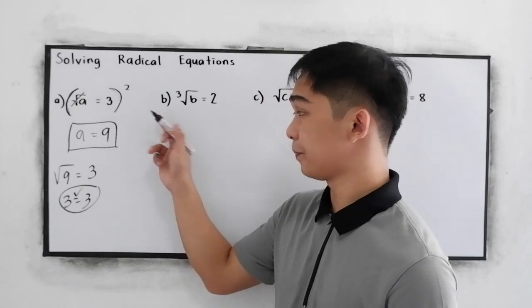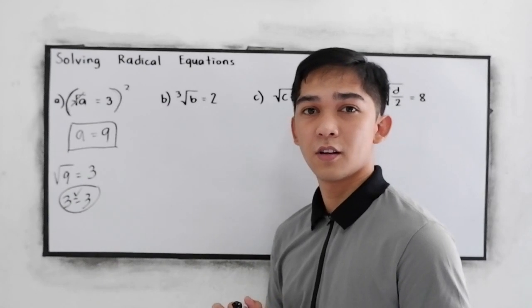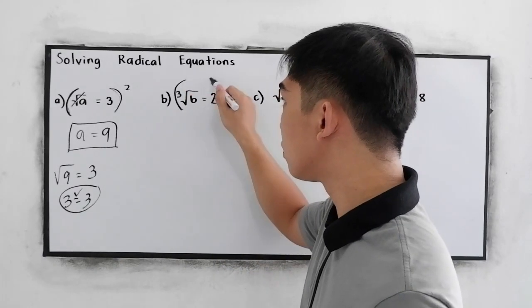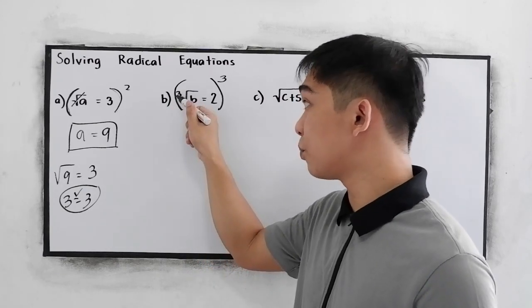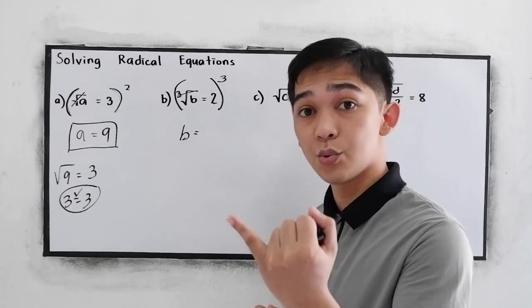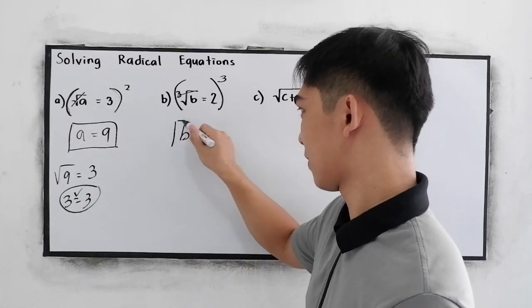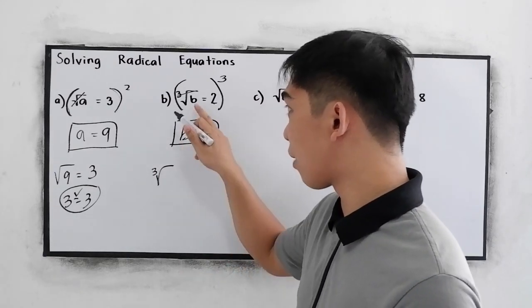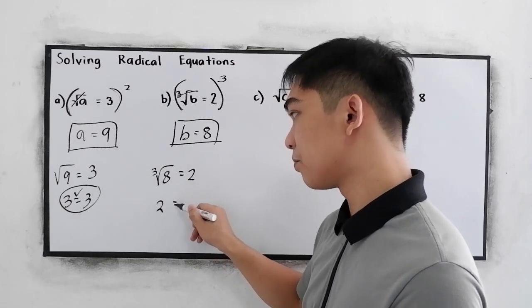Next, letter B, our second example. Cube root of B is equal to 2. We need to cube our equation to cancel our cube root. So B is equal to 2 cubed, that is 2 times 2 times 2, which is 8. Checking: cube root of 8 is 2, which is correct.